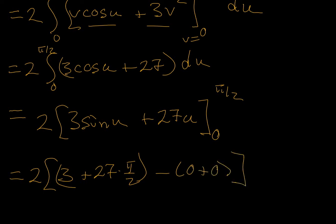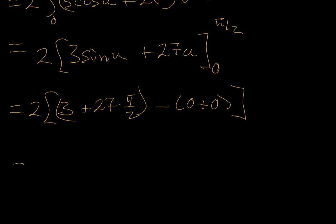And when we distribute the 2, we're going to end up with 6 plus 27 pi, and it's mass, so maybe it's in grams or kilograms. The units weren't provided, so we can't do more than that right now, but there's our solution.